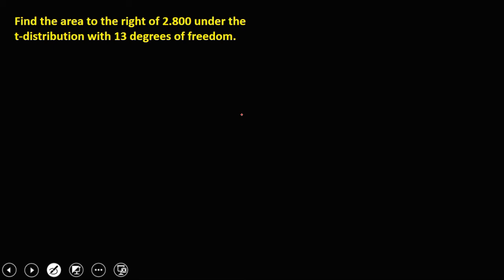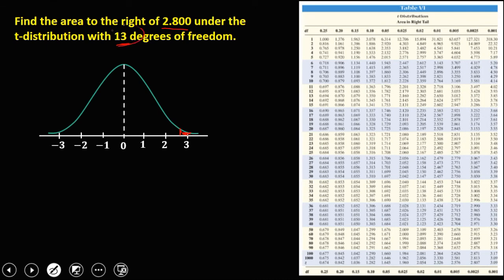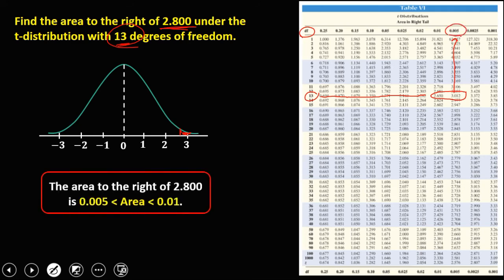Find the area to the right of 2.8 under the t-distribution with 13 degrees of freedom. On the curve, the t-value is 2.8. Using the t-distribution table with df equal to 13, we look for 2.8. Since there is no 2.8 in the table, but we have 2.6 and 3.0, then 2.8 is between 2.6 and 3.0. Therefore, the area of 2.8 is between 0.005 and 0.01.